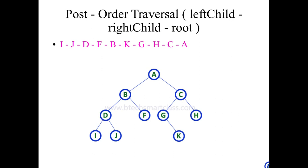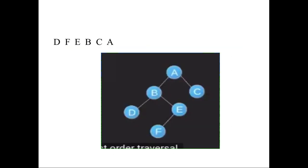So this is how the post-order traversal will be done. Again, I will show you the animated video which will have a node count of 6, and we will see the post-order traversal for that binary tree. Here, a binary tree which is having the root node of A.